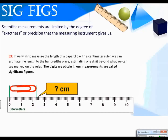Hi, chem students. Welcome to the second video in our measurement unit over significant figures. Scientific measurements are limited by the degree of exactness or precision that the measuring instrument gives us. For example, if we wish to measure the length of a paper clip with a centimeter ruler, we can estimate the length to the hundredths place, estimating one digit beyond what we can see marked on the ruler. The digits we obtain in our measurements are called significant figures.